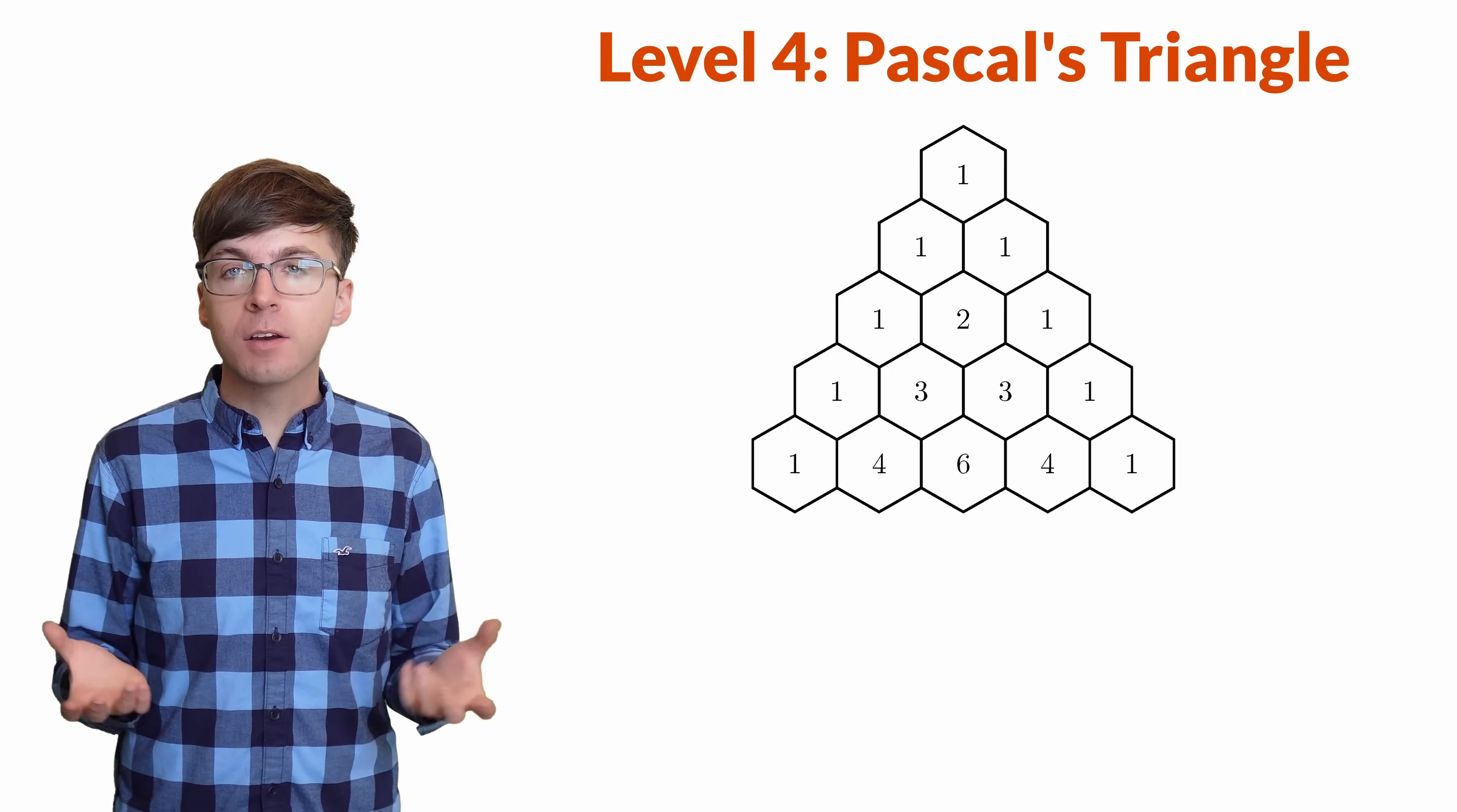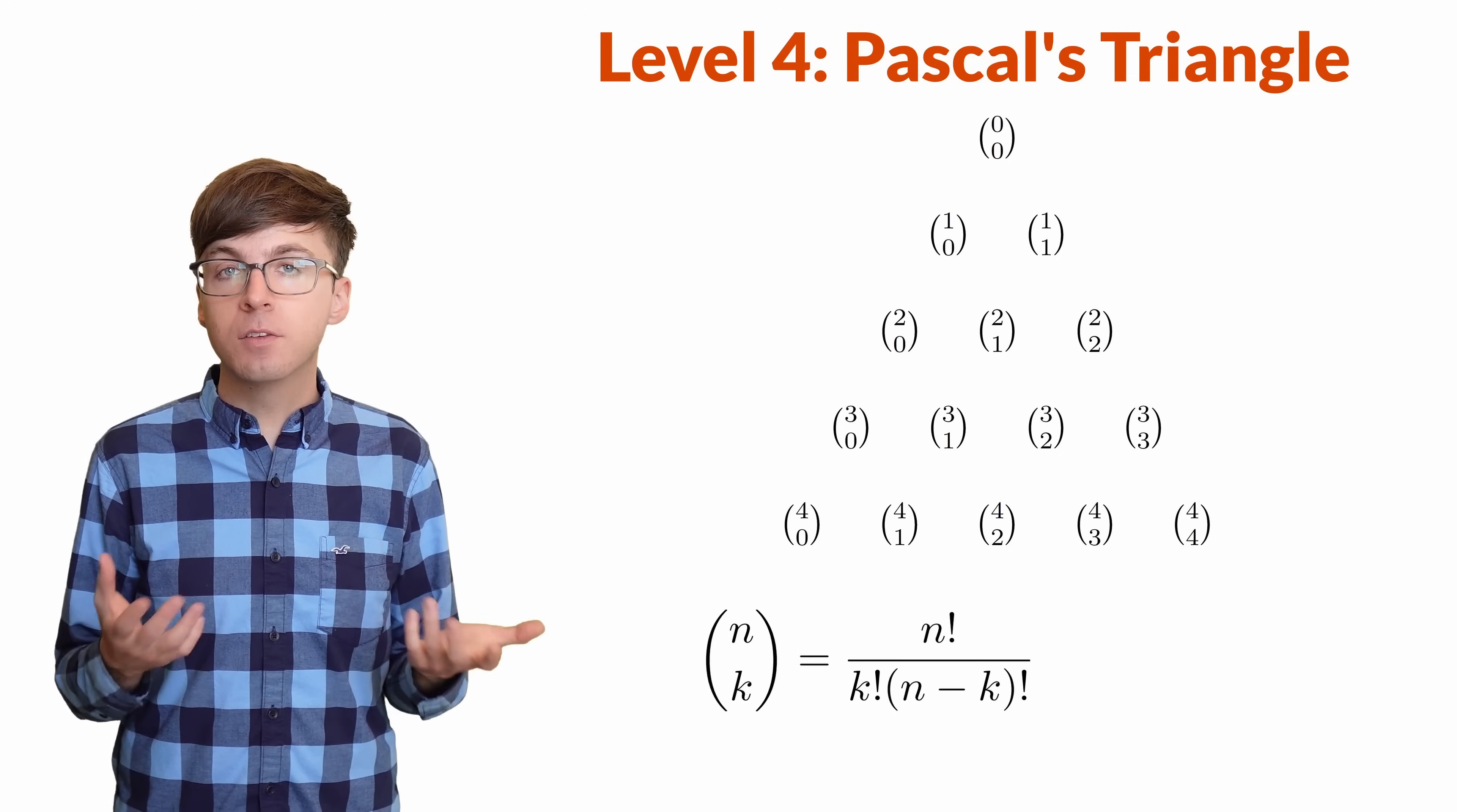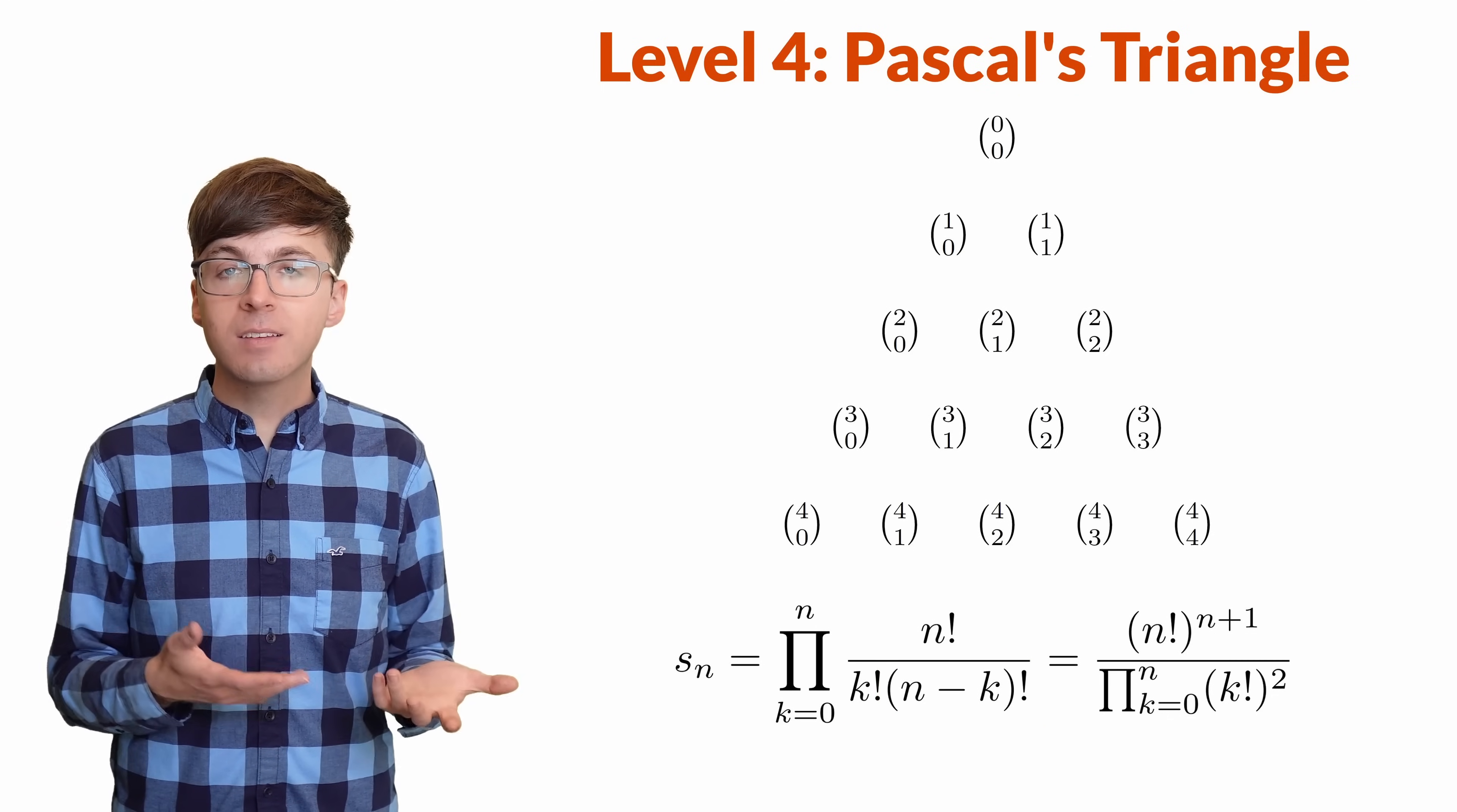The idea is to multiply the values in each row. Let's call these row products Sn. It turns out the entries in Pascal's Triangle are combinations or binomial coefficients. I have another video all about Pascal's Triangle that gets into the details of that. The kth entry in the nth row of the triangle is n choose k, which has this formula. We can use this to find the product of an entire row of Pascal's Triangle. In the numerator, we have an n factorial for each of the n plus 1 factors. Then in the denominator, we'll have each factorial from 0 factorial to n factorial show up exactly twice, once in each position. So we can write Sn like this.